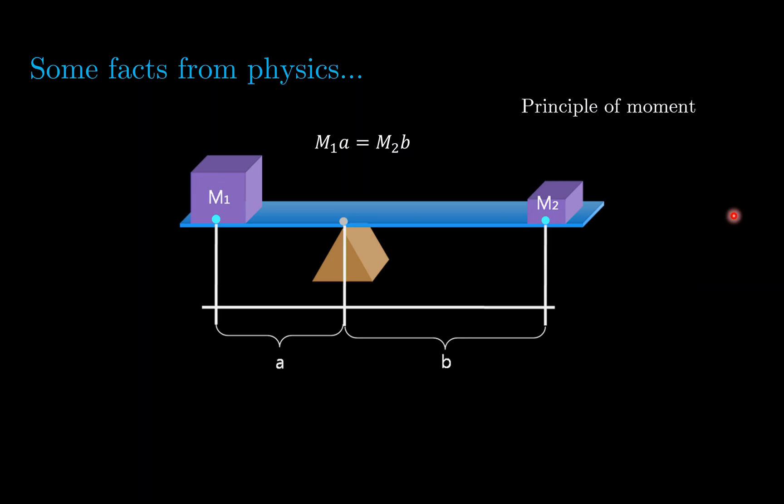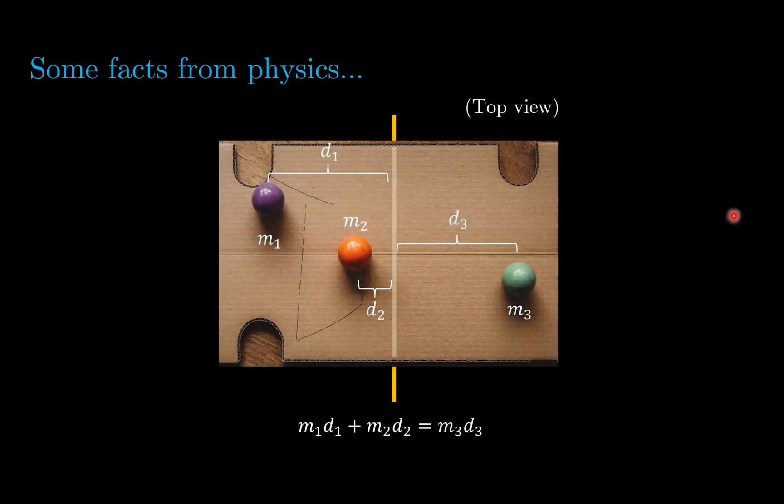There's even a two-dimensional version of this rule. Basically this is a top view of a 2D board, and the yellow rod here is beneath the board. If this board can balance on the rod, then we will require M1 times D1 plus M2 times D2 equal to M3 times D3. This is just a recap, and this is an if and only if statement. This balances the moment clockwise and anticlockwise relative to the rod.